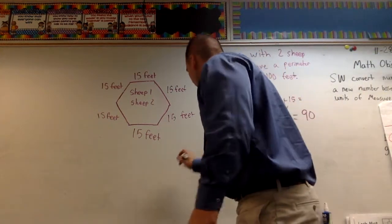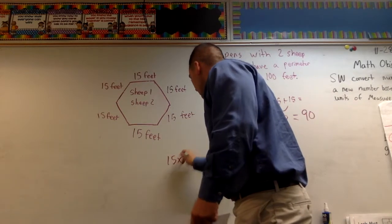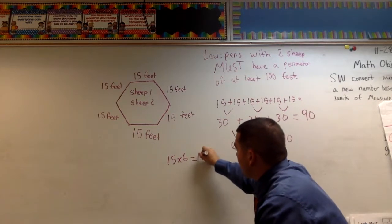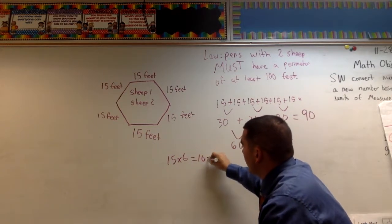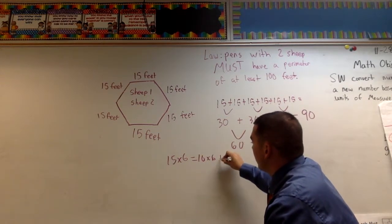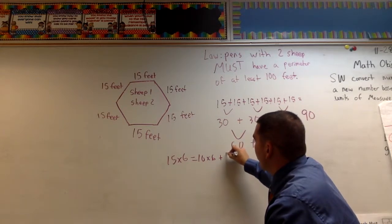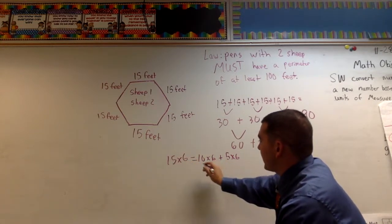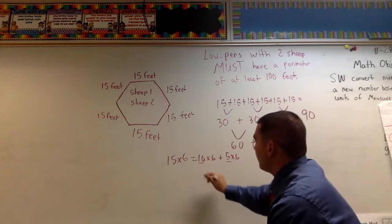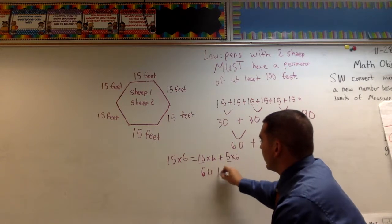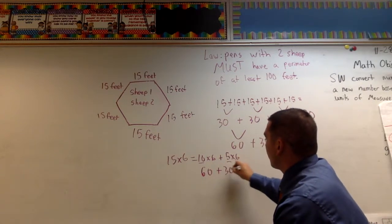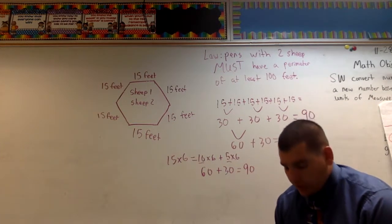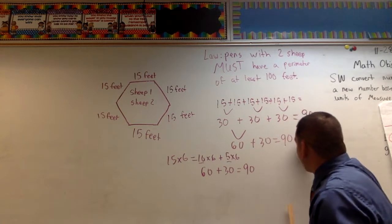Maybe you already know how to multiply 15 times 6. Well, 15 times 6 is the same thing as 10 times 6 plus 5 times 6. Okay, I just broke my 15 up as 10 and 5. And then I can do 60 plus 30. Again, I'm getting my 90. So I'm showing you a lot of different ways. Okay, well, remember, this is 90 feet.